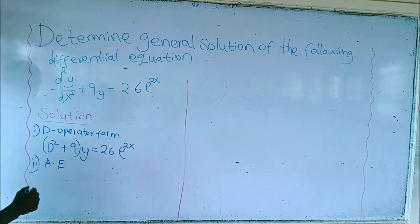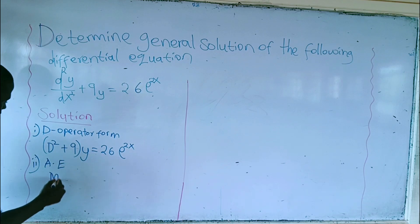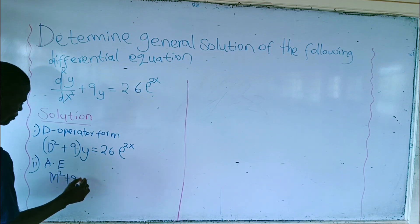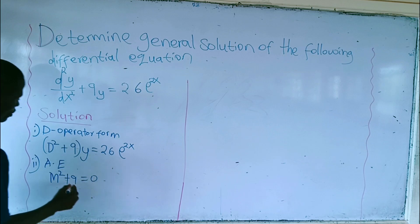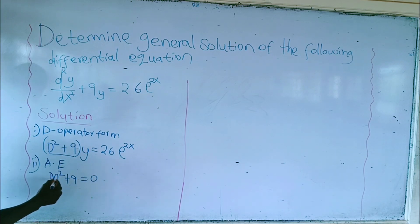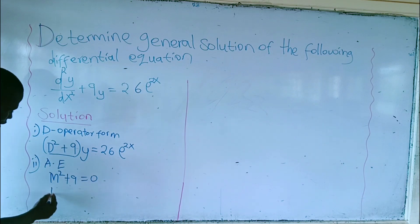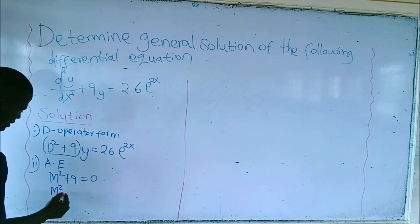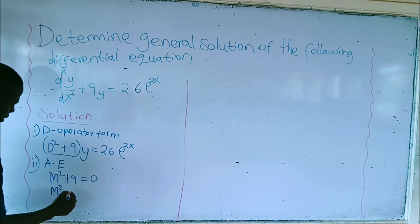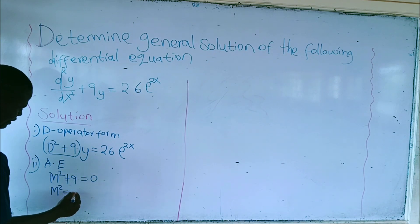The auxiliary equation will be m squared plus 9 is equal to 0. You only write this function into m squared plus 9 is equal to 0. To solve this equation, m squared will be equal to — moving 9 to the other side — negative 9.